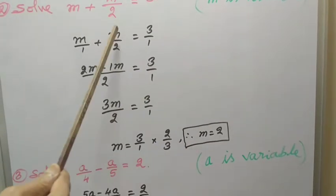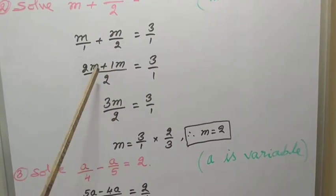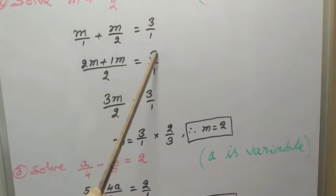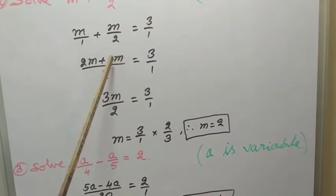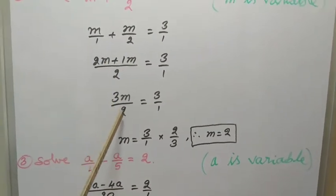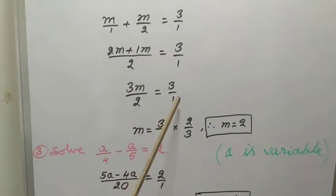Divide this 2 by 2, quotient is 1, 1 into M, 1M. So 2M plus 1M divided by 2 equal to 3 by 1. Add these two like terms: 3M by 2 equal to 3 by 1.